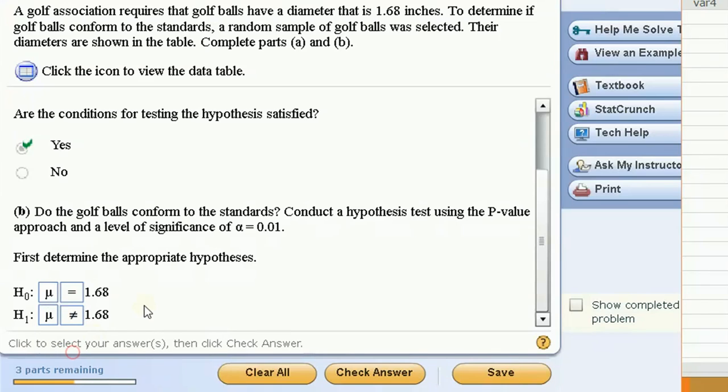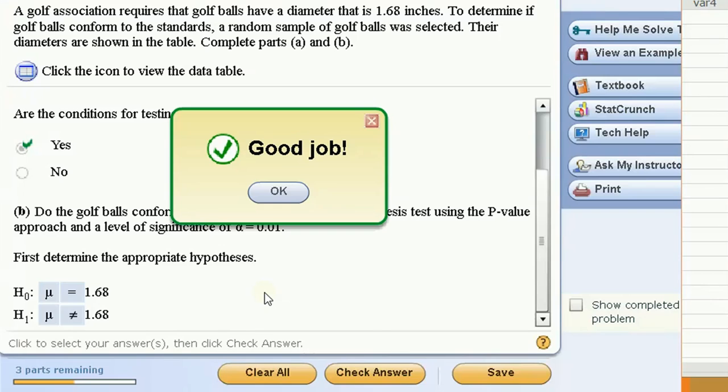If it's higher or lower, that means it doesn't conform to the standards. So that's why we're choosing a two-tailed test for this problem.